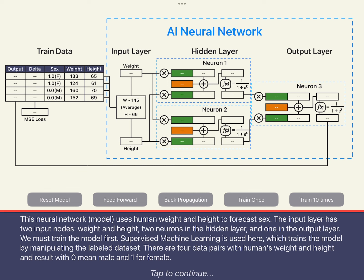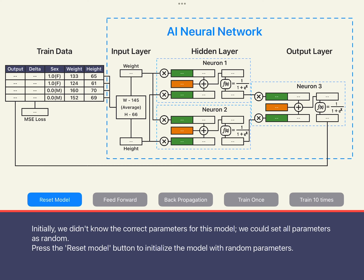That is, we note the correct results of the training data in advance and reversely adjust the neural network's parameters by comparing the neural network's output with the error of our predicted results, so that the accuracy of the neural network prediction continues to improve. Our training dataset has four pieces of data, each being a set of height, weight, and gender data, with one representing female and zero representing male. In the prediction results output by the neural network, if it is less than 0.5 it means male, and if it is greater than 0.5 it means female.